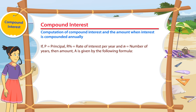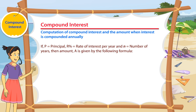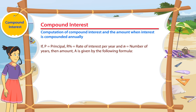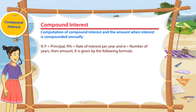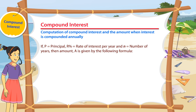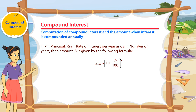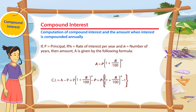If P is equal to principal, R% is equal to rate of interest per year, and N is equal to number of years, then the amount A is given by the following formula. The compound interest is also given by the following formula.